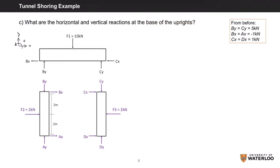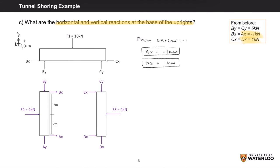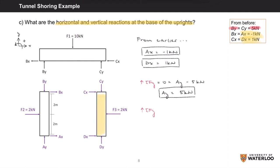Part C asks for the horizontal and vertical reactions at the base of the uprights. For horizontal reactions, we already found AX = negative 1 kN and DX = positive 1 kN. For vertical reactions, analyzing the left upright: sum of FY equals zero gives AY minus BY (5 kN) equals zero, so AY = 5 kN. Similarly for the right upright: DY minus CY (5 kN) equals zero, so DY = 5 kN.